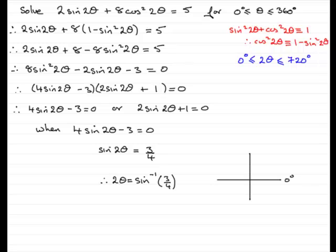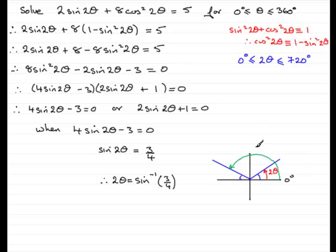We ask: where is sine positive? Since sin(2θ) = +3/4, sine is positive in the first and second quadrants. Draw lines equally inclined to the horizontal in those quadrants, marking the two possible 2θ values within 0–360°. Other solutions come from adding another 360° rotation to each of these.